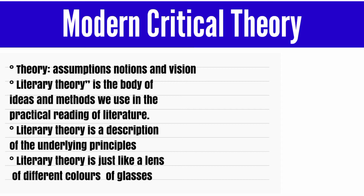Theory is specified as a formal discipline in the 20th century, but if we look at ancient times, major philosophers also had concepts of theory relating to human existence, the world, the universe, and the meaning of humanity. In that broader sense, we can trace these ideas back further, though what we call literary theory or modern critical theory is best understood from the 20th century onwards.